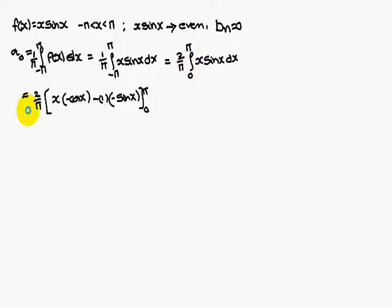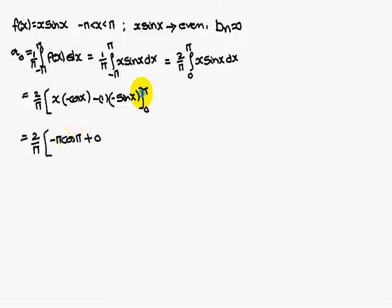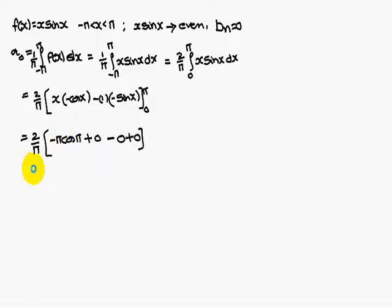Integrating by parts: x times (minus cos x) minus 1 times (minus sin x), evaluated between 0 and pi. Substituting the upper limit pi: minus pi cos pi plus sin pi, which is 0. Substituting lower limit 0: everything is 0. So we are left with 2 by pi times (minus pi cos pi). Pi cancels, giving minus 2 cos pi. Since cos 180° is minus 1, we get minus 2 times minus 1. Therefore a0 = 2.